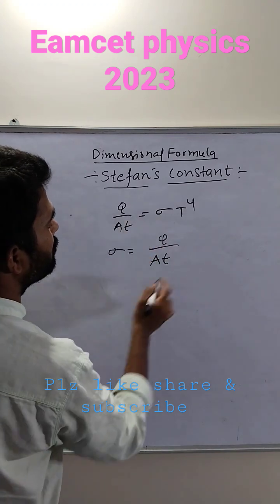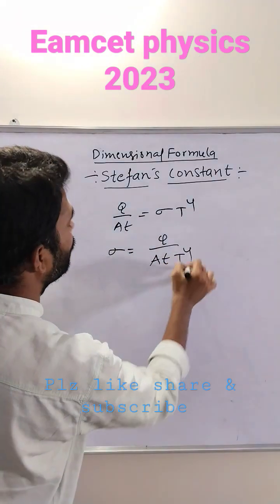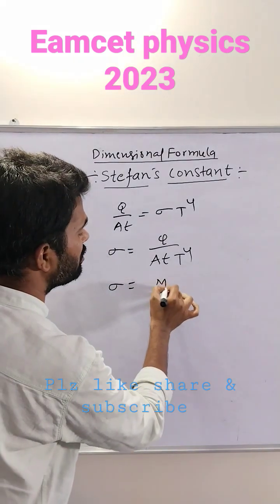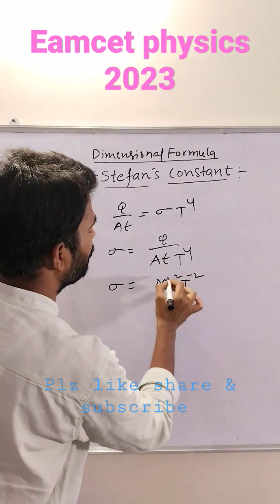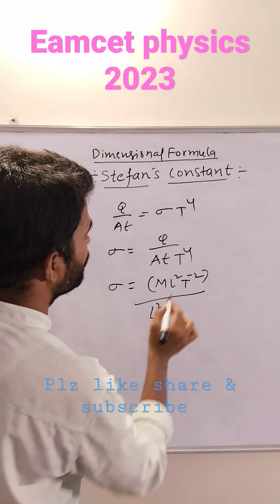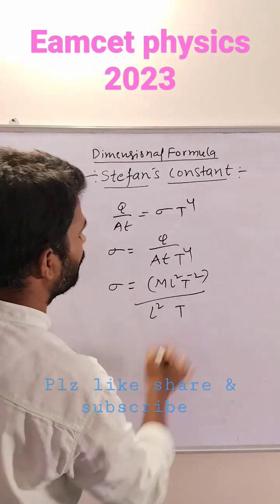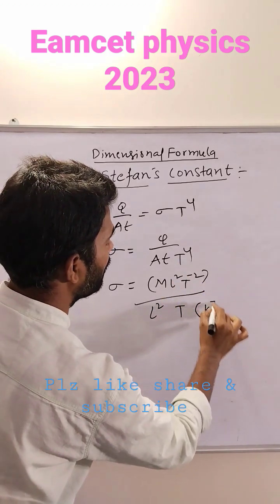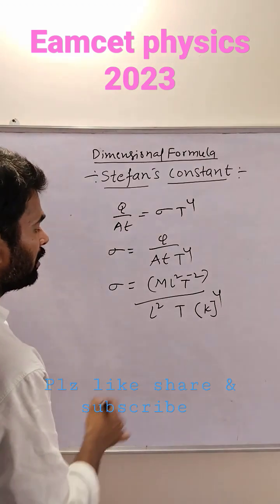Here sigma is equal to q by At T to the power 4. Q is the energy, energy dimension formula ML squared T to the power minus 2. A is the area, area dimension formula L squared. T is the time, time dimension formula T only. Capital T is the temperature, temperature dimension formula K.